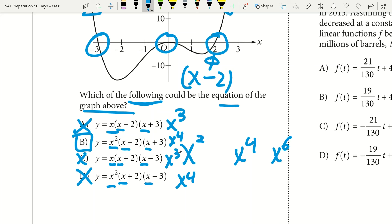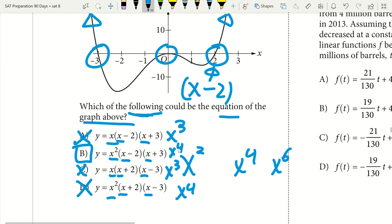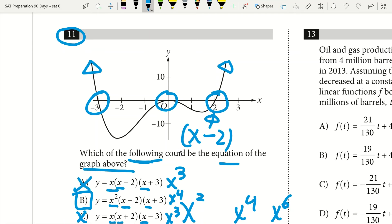The tip here that you can use to save time is really twofold. First part is looking at end behavior—if they're both going up then we have x raised to an even integer. If one was going up and one was going down, then x would be raised to an odd integer. The other thing we want to look at is our zeros. If we have a root at negative three, we'd want x plus three. We had a root at zero and at two, so we want x minus two and x plus three, which we see in option B.